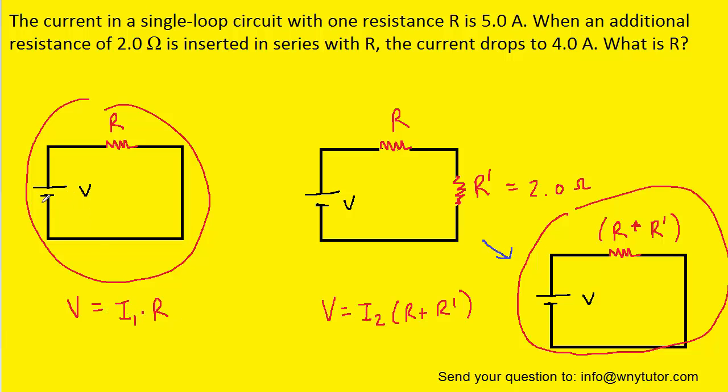Now, because the same battery is present in both the original and the new circuit, that means the potential of that battery is the same. So we could take the potential I1 times R and set that equal to the potential of the other circuit.